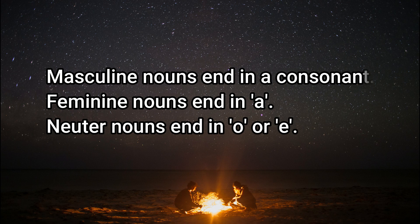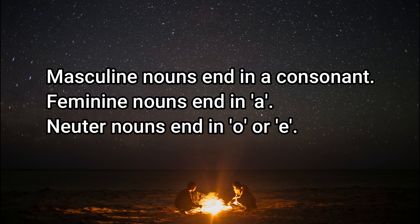Now let's look at masculine noun examples. Masculine nouns end in a consonant — that's how you recognize them. Feminine nouns end in A, and neuter nouns end in O or E, like Serbian letters.